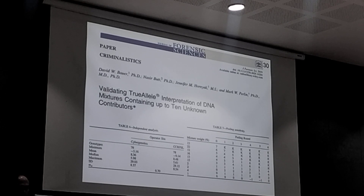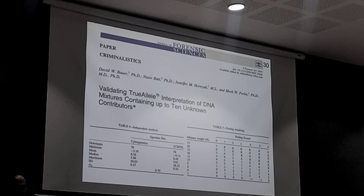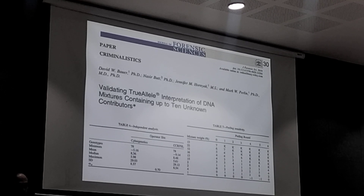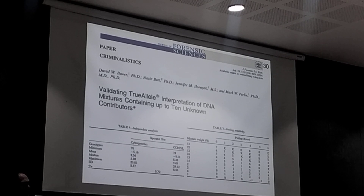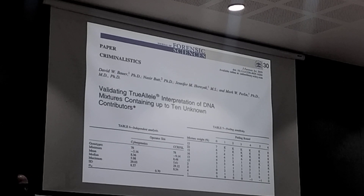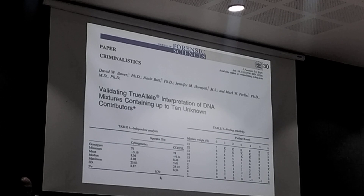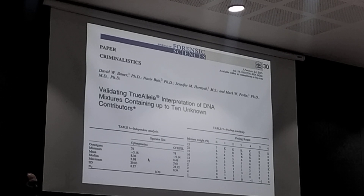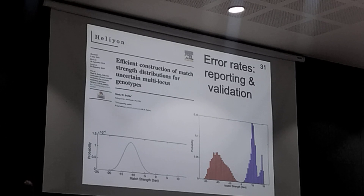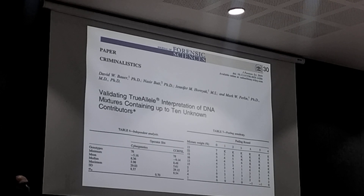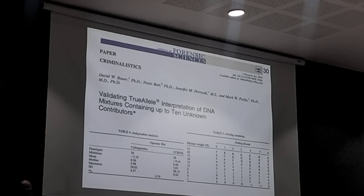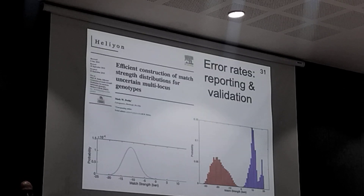A paper done with Dr. Nasser Butt of the Cleveland lab showed results looking at up to ten unknown contributors — considered impossible with any other technology. The paper won a noteworthy award for its findings. What we found was that their lab running their system gave the same answers as our lab running our system. So independently, we're able to get the same answer.